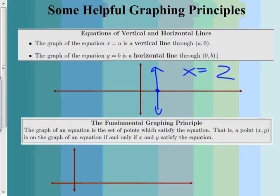So up and down for x equals 2. And y equals 3 would go the other way — here's 3, y equals 3 would go through there. They are a little confusing. The y equals 3 is parallel to the x-axis, which is counterintuitive. And x equals 2 is parallel to the y-axis, even though it's an x equals thing.